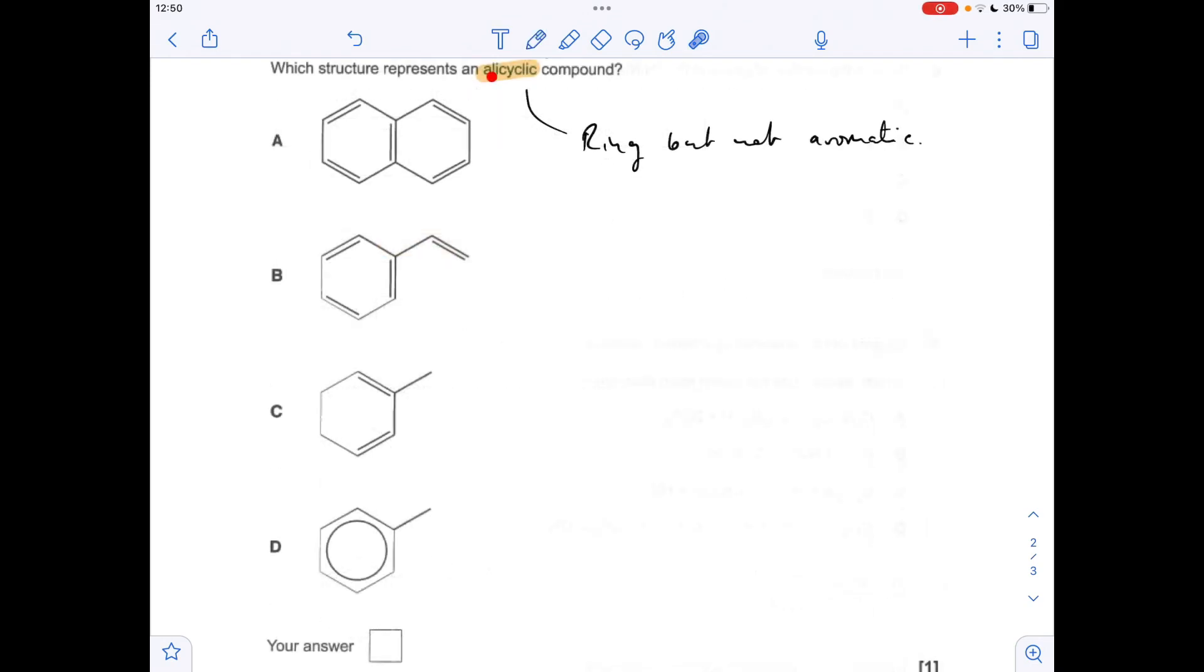Next question. Testing our understanding of these key organic words I call them. So alicyclic means it's a ring but it's not aromatic or not benzene. So A, we've got aromatic rings here. B, that's an aromatic ring. C, that's a ring. But it's not aromatic. So C was the answer. And D is obviously an aromatic ring.